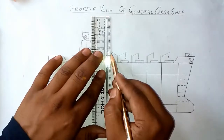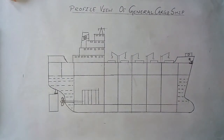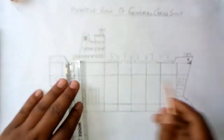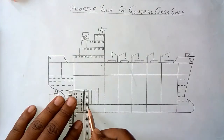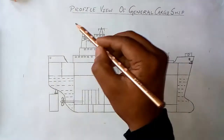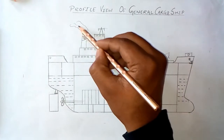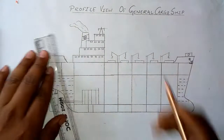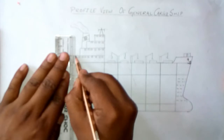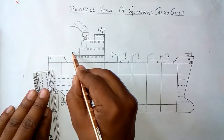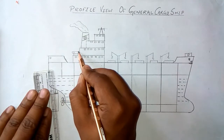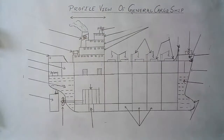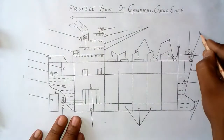These are the cranes used for the loading and discharging of cargo. Here is the cofferdam — you can see the smoke coming out of the funnel. We also have two lifeboats, one on the starboard side and one on the port side. Our sketch is now complete.